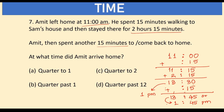At what time did Amit arrive home? Quarter to 1 is 12:45, so that's not it. Quarter past 1 is 1:15, so that's not it either. Quarter past 12 is 12:15. Quarter to 2 means 15 minutes before 2, which is 1:45 — that's the right match. So option C, quarter to 2, is the correct answer.